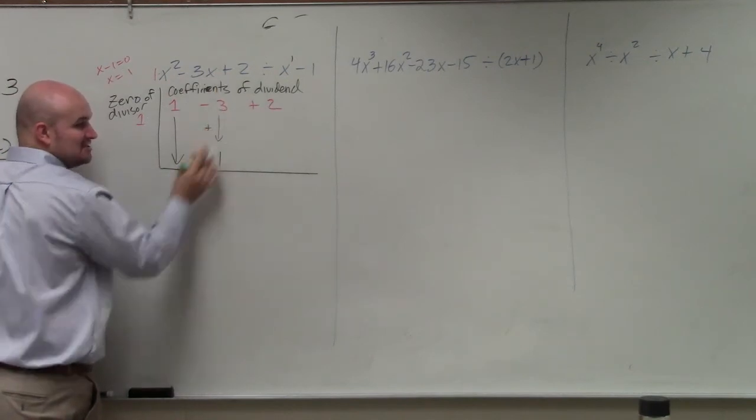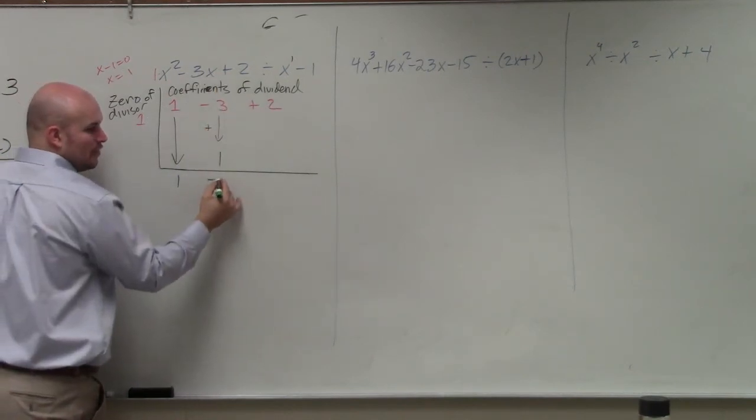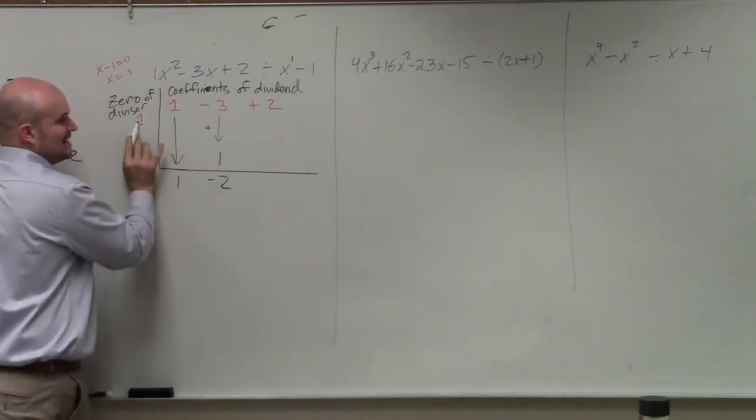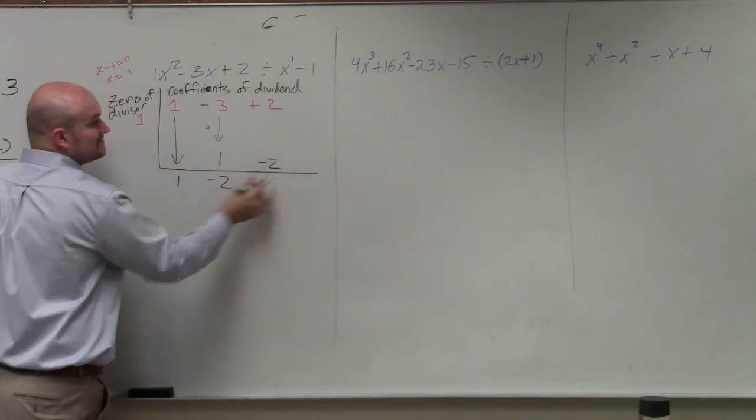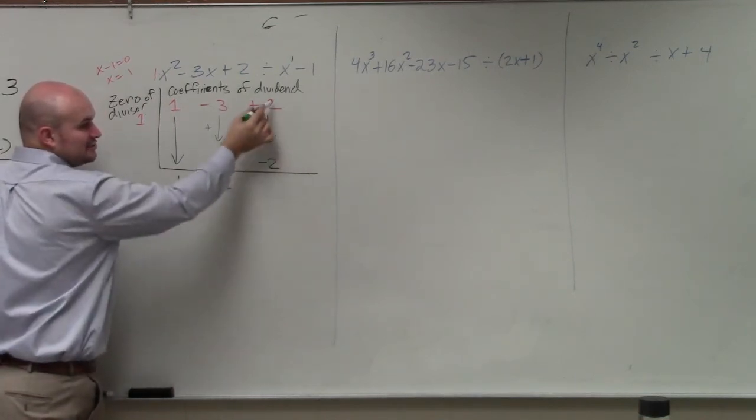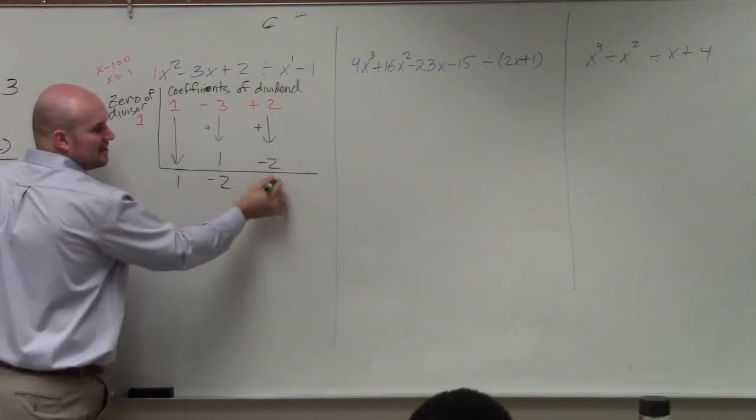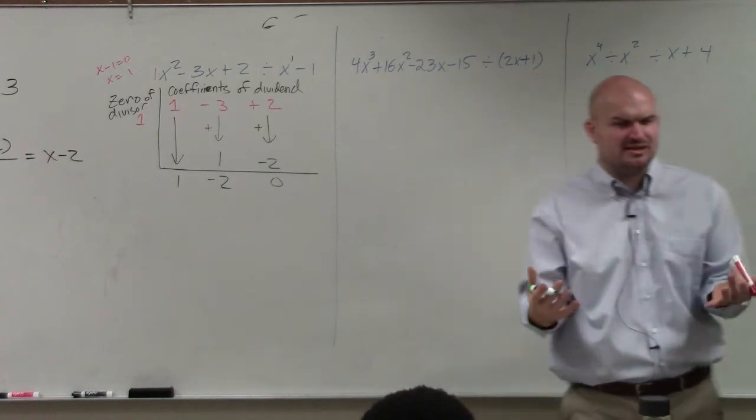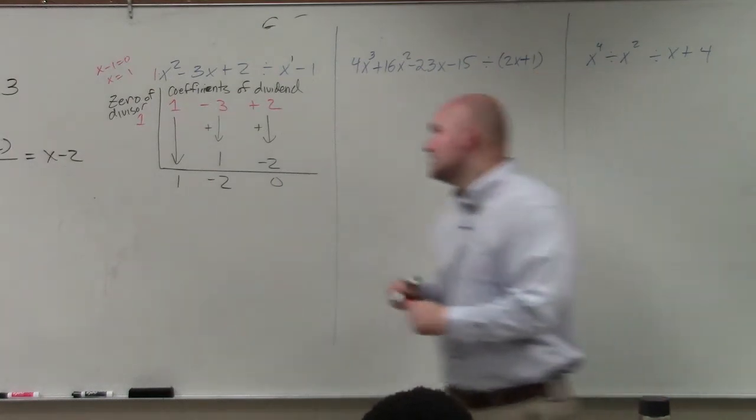Negative 3 plus 1 is negative 2. Multiply on the diagonals. Negative 2 times 1 is negative 2. Add the verticals. 2 plus negative 2 is 0. Now, how do we make sense of it? That's kind of the hard thing about synthetic division, I think, a lot of times, is how to make sense of this.